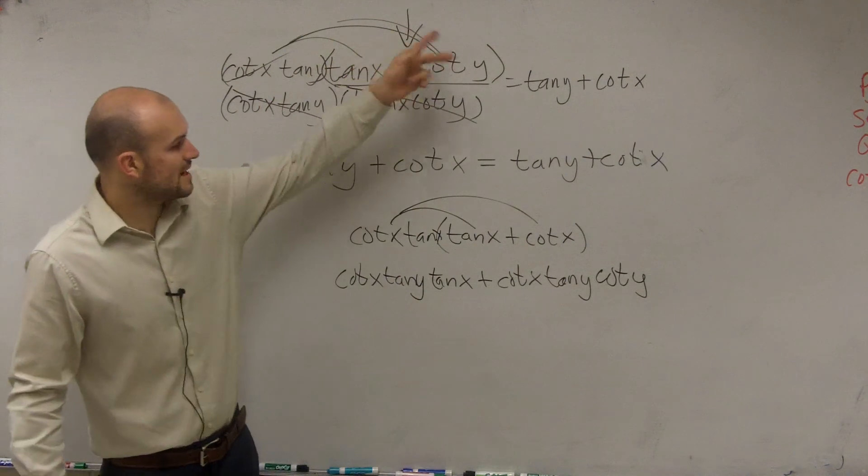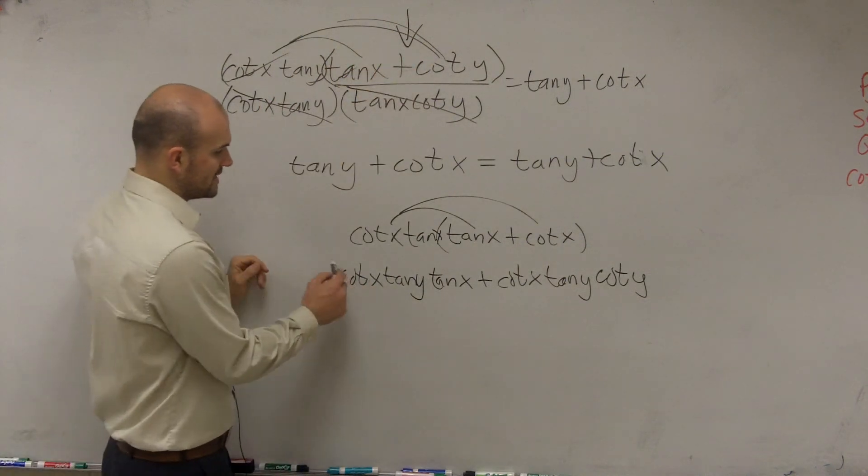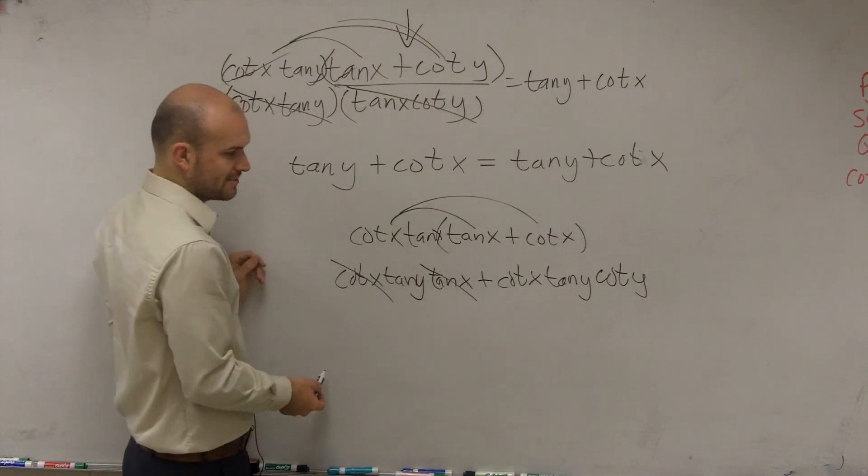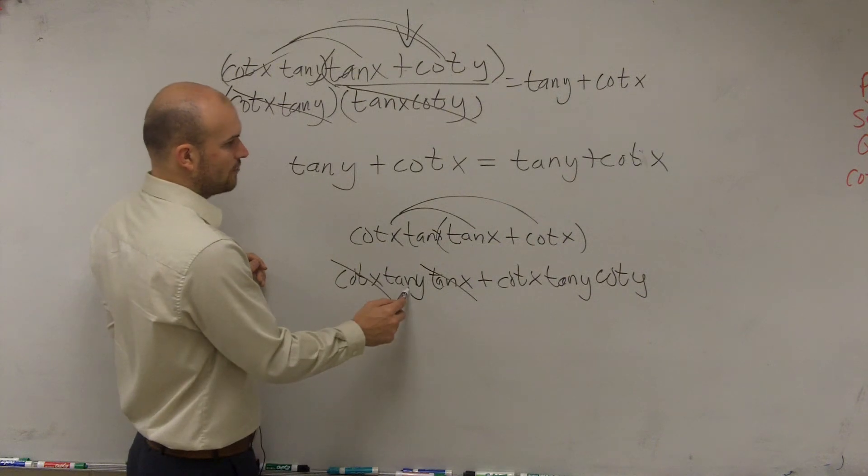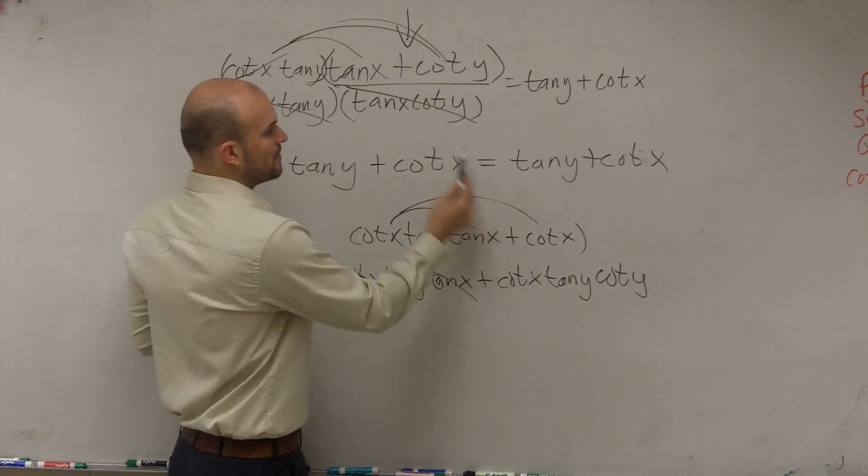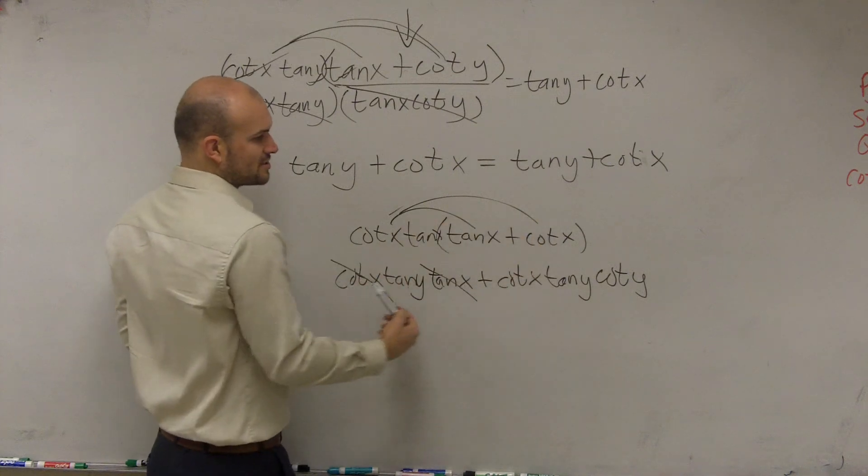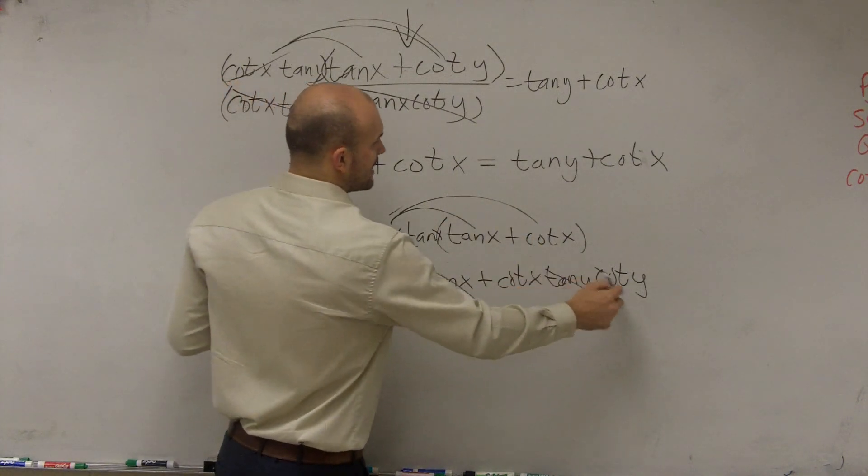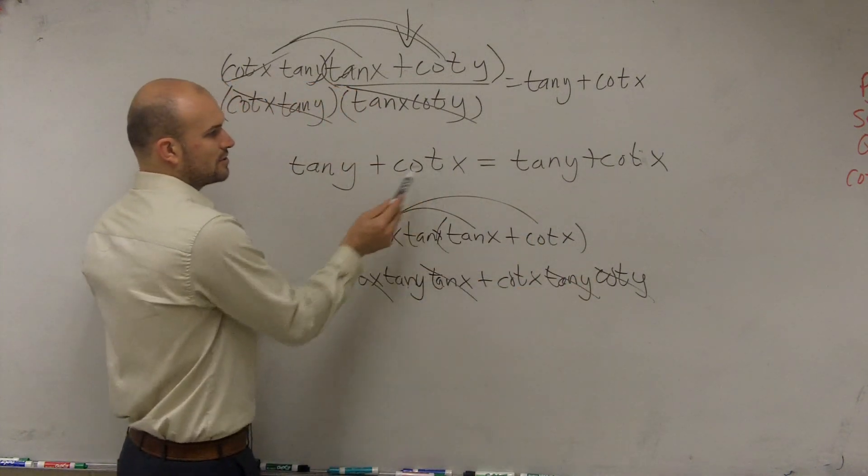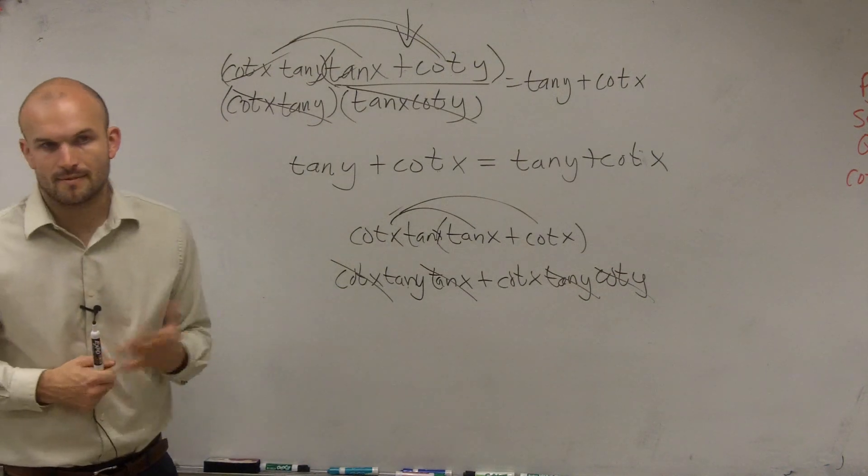So when I multiply this terms times both of these terms, you notice that the cotangent of x's, those are reciprocals, so you're just left with tangent of y. And then when I multiply this whole term times the second term, the tangent of y and cotangent of y cancel out, so I'm just left with cotangent of x. And there you go.